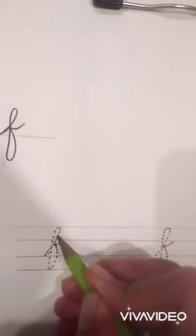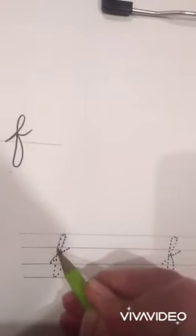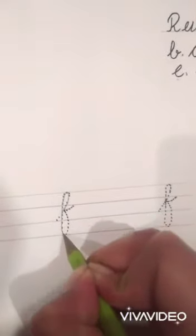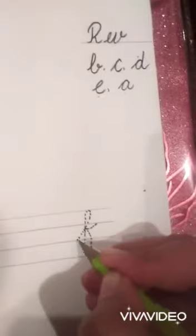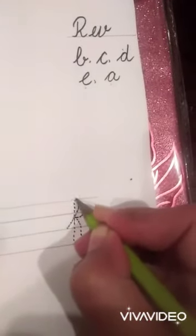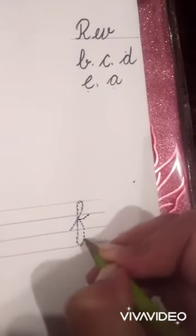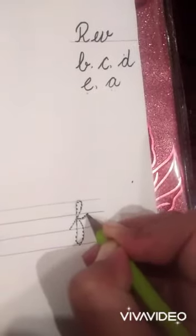Now we learn how to write letter F. First of all you will start from the slending line, then curve, straight line, then curve and then tail. Curve and then tail. Trail. You have to trace properly.